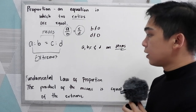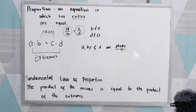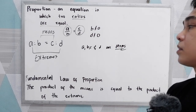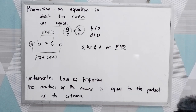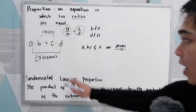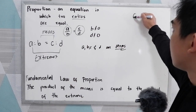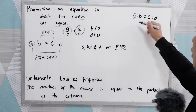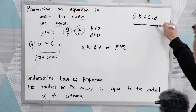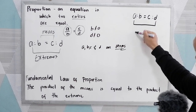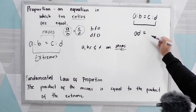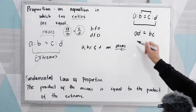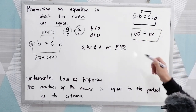Now we have the fundamental law of proportion: the product of the means is equal to the product of the extremes. So for A is to B is equal to C is to D, the product of the extremes A times D equals AD, and that is equal to the product of the means B times C.